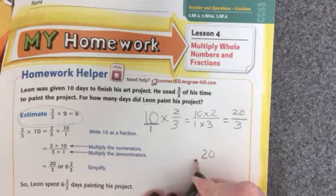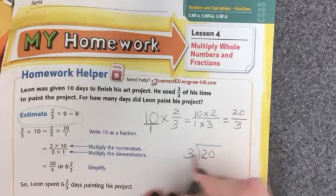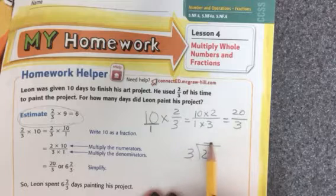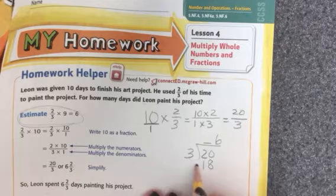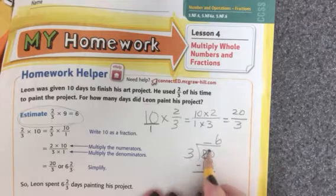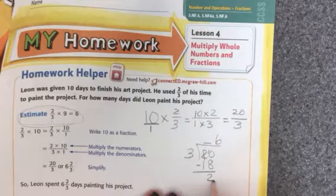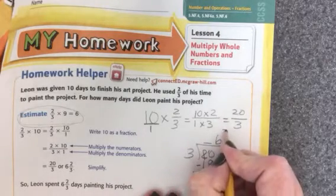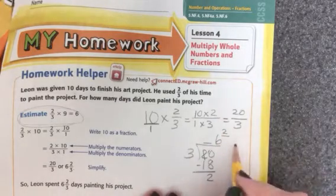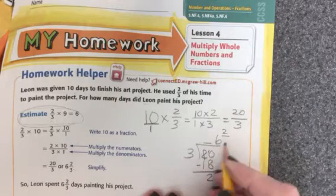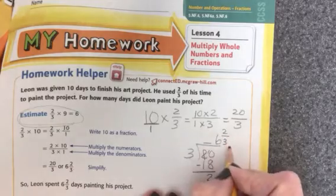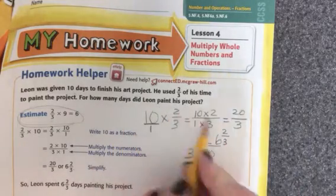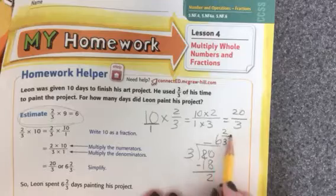We're going to write 20 in a division box and divide by 3. 3 can't go into 2. 3 goes into 20 six times. 3 times 6 is 18. When I subtract, I get 2. So 2 is my remainder. I'm going to put 2 up here as a numerator and write my remainder as a fraction, with 3 as my denominator. So my answer is six and two-thirds. For how many days did Leon paint his project? For six days and then two-thirds of another day.